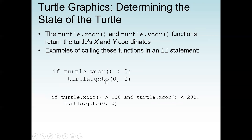The second example: if turtle.xcor() is greater than 100 and also turtle.xcor() is less than 200, we want to return x back to zero with y also zero. So we call turtle.goto(0, 0).